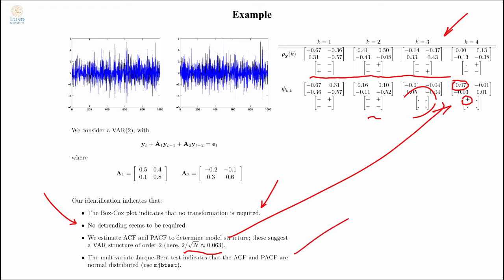I also check the extension of the Gaussian test, which is the multivariate Jack Barrett test. You can call this function to find that out. And the ACF and the PACF are indeed Gaussian distributed, so I can trust my tests. This shouldn't be a surprise to you since I simulated the data using Gaussian variables.